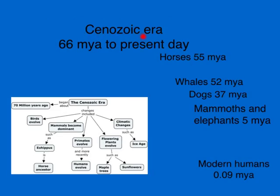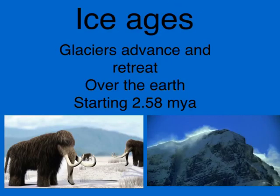Then we come to the Cenozoic Era — the era we're in right now. It goes from 66 million years ago to the present day, and is called the age of mammals. During this time, horses, whales, dogs, and elephants evolved, and toward the end of this era, modern humans evolved. One of the prevalent events during this era were the ice ages, when glaciers advanced and retreated over the surface of the Earth. This started about 2.58 million years ago and is continuing today; some people think we are in another ice age today.